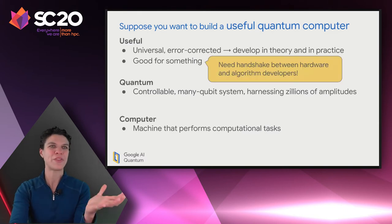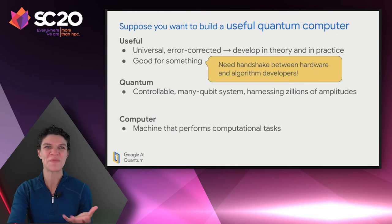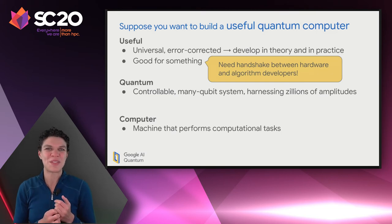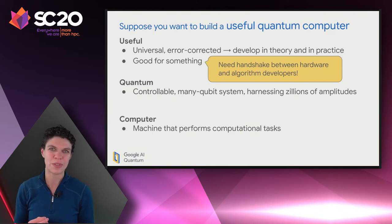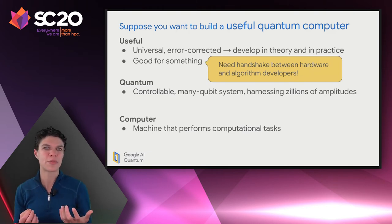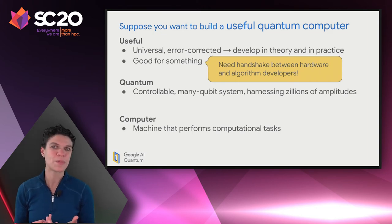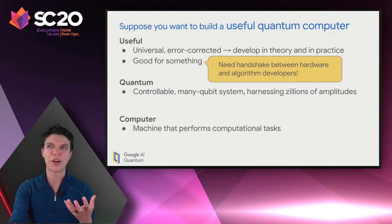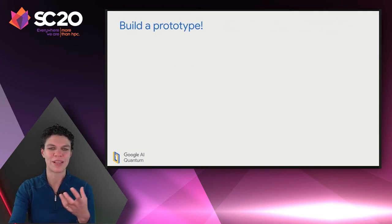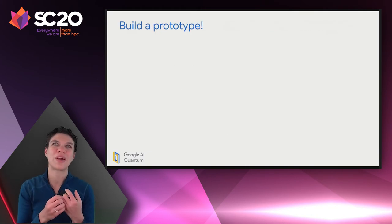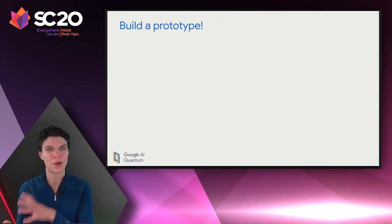The other half of 'useful' is that the computer should be good for something. In order to make progress on developing algorithms that can be run on the processor, we need a good handshake between hardware developers and algorithm developers who would write programs to run on this computer. This is particularly critical in the near term, while quantum processors are fledgling and each one is unique, where an algorithm must be written specifically for a certain processor.